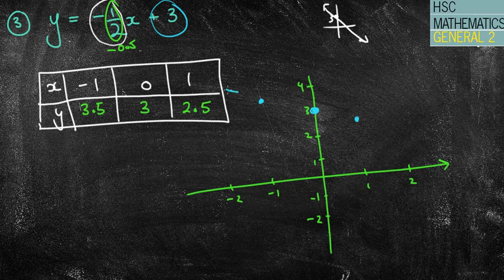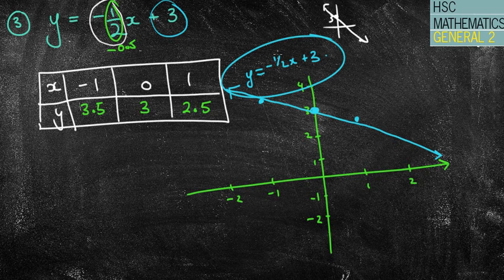So negative 1 and 3.5. So that's going to be between the 3 and the 4. 0 and 3. That's my y-intercept, the plus 3, as you can see. And then 1 and 2.5, which I've got there. I'm going to draw my line straight through it and keep on going down. Again, mine's not very accurate, guys. Yours should be. Label it as y equals negative 1.5x plus 3. I've got your answers there.